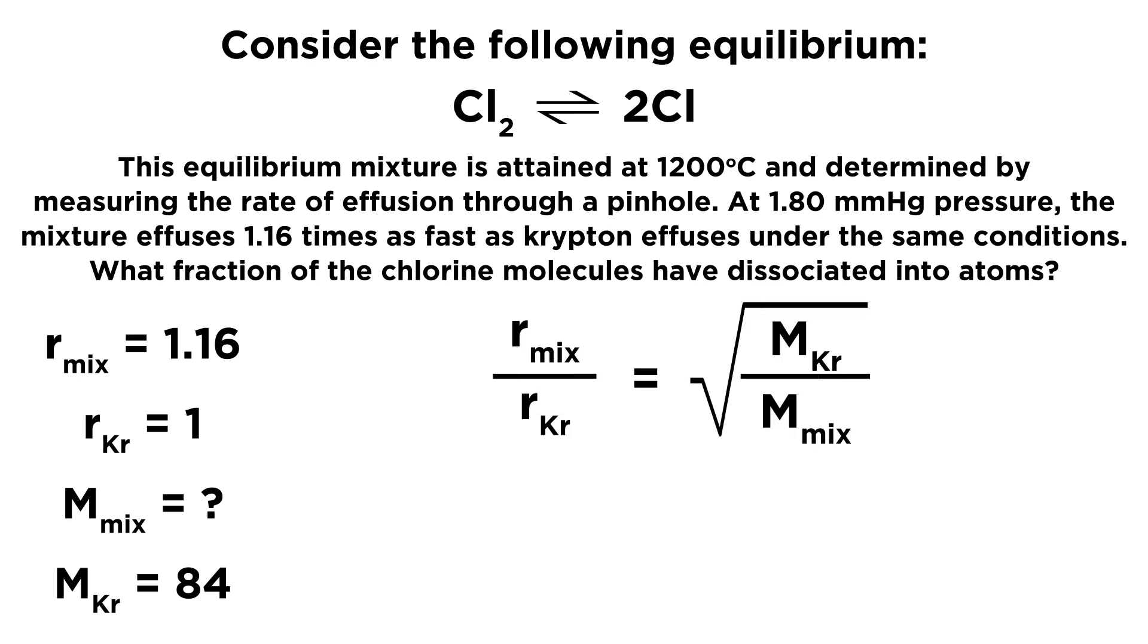So here's Graham's law of effusion, and we can plug things in. So let's put our rates of effusion in there. We have 1.16 over 1, and now let's go ahead and square both sides so we get rid of that square root. Now let's go ahead and plug in 84 for the molar mass of krypton, and now we can solve for the molar mass of the mixture. That's going to be 62.426.